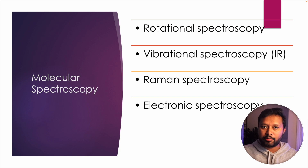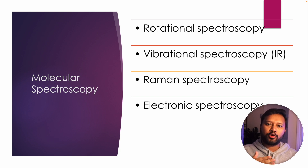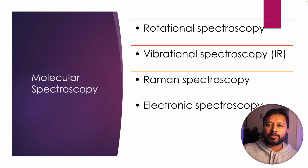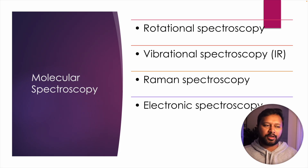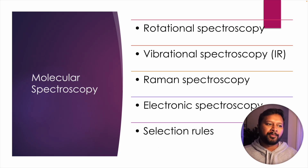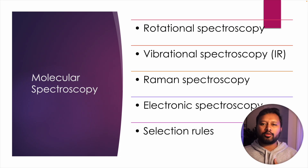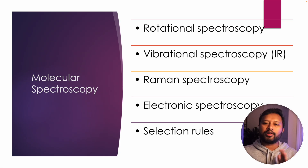Then comes electronic spectroscopy, where the concept of the Jablonski diagram comes in. You should know what these transition states are, what intersystem crossing is, what internal conversion is, what fluorescence and phosphorescence are — all these should be covered. Also cover the different selection rules for all of them. This covers the major part of molecular spectroscopy.